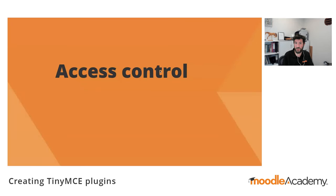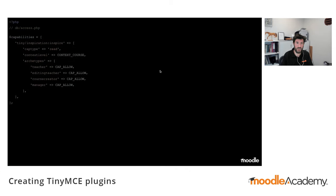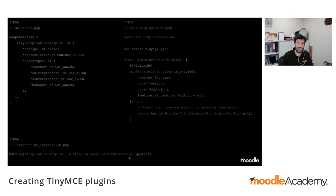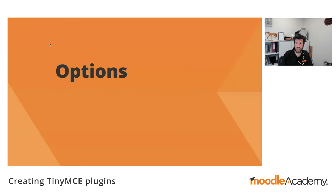Moodle has a fine-grained roles and capability system, allowing plugins to define their own capabilities with defaults. Administrators can set which user roles hold those capabilities. In our fictional scenario, the client wants to restrict access to teachers and content creators only. To do so we create an entry in our plugin's db/access.php file, and a corresponding language string explaining to administrators what that capability does. Finally we override the is_enabled method in our plugininfo class to check whether the current user has the 'tiny/inspiration:inspire' capability in the current context — for example, whether they are a teacher in the current course.